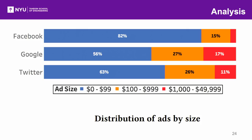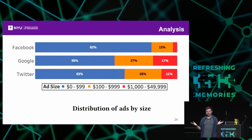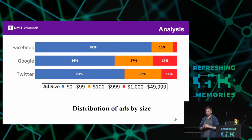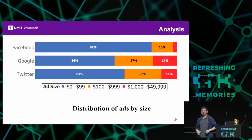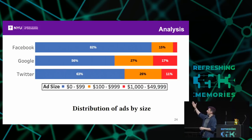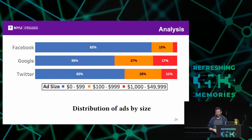Now we can do some analysis. The first thing we looked at was the size of the ads. The thing that pops out is that the majority of ads on all platforms are between zero and $100. These are what are normally called micro-targeted ads, typically seen by less than 1,000 people. These are very short-lived, narrowly targeted ads honing in on a specific demographic. It appears that the majority of ads—especially on Facebook's platform, 82% of them—are of this micro-targeted kind. This confirms the reporting about the trend of micro-targeting within political advertising.